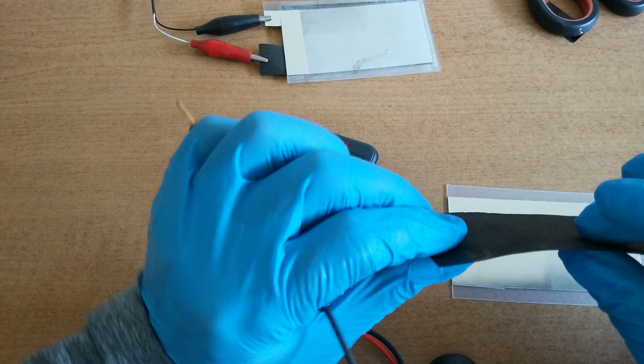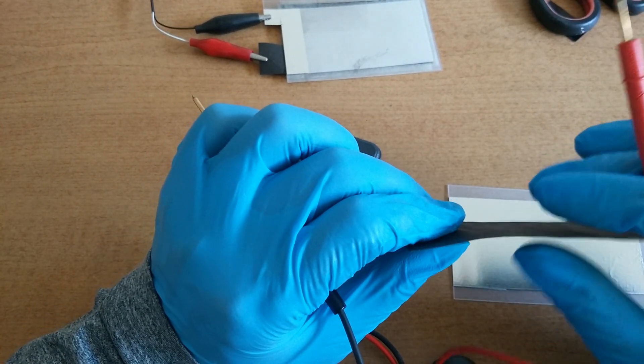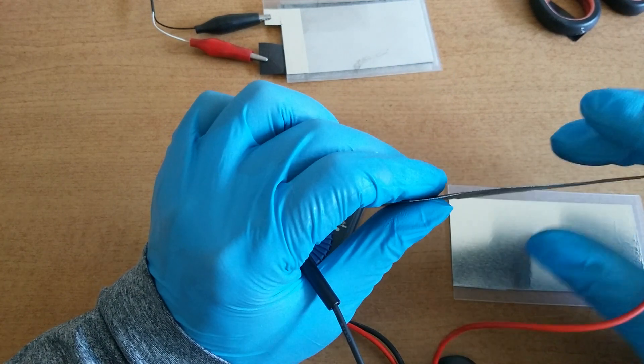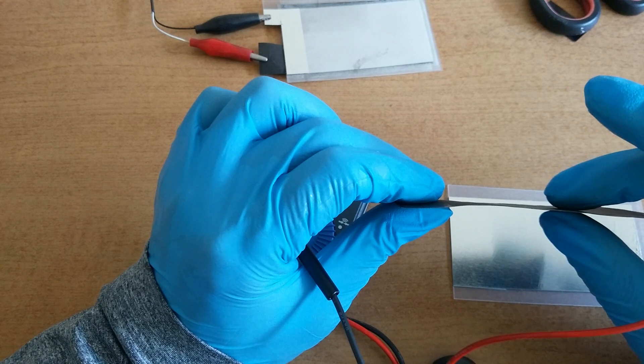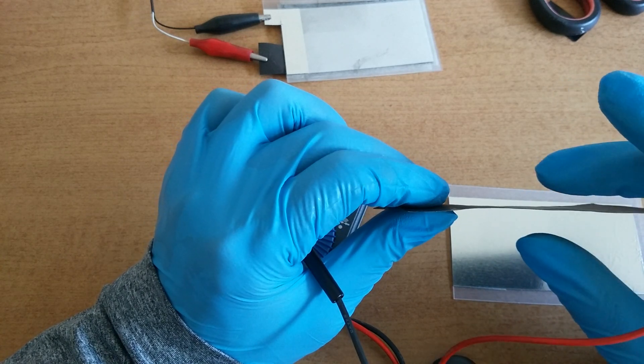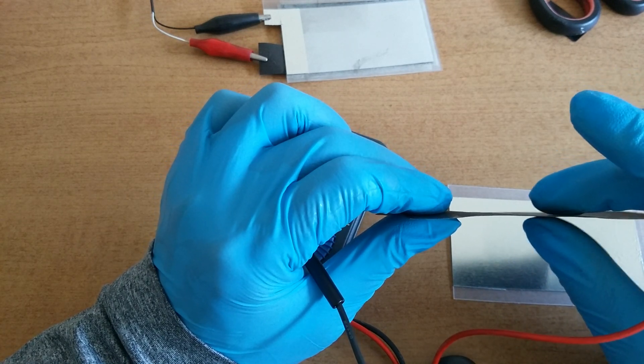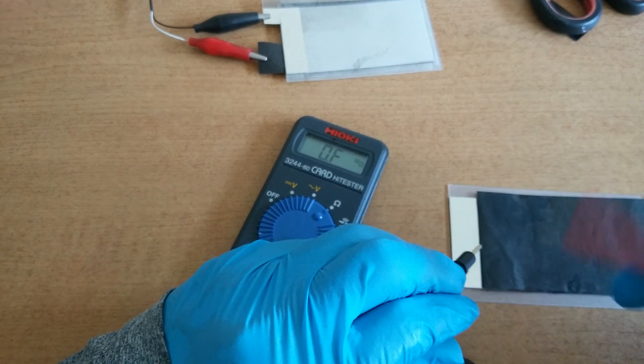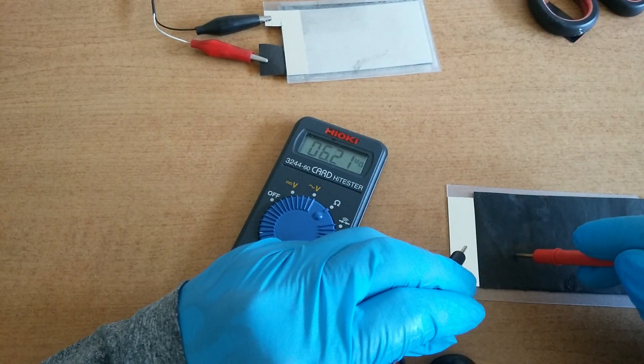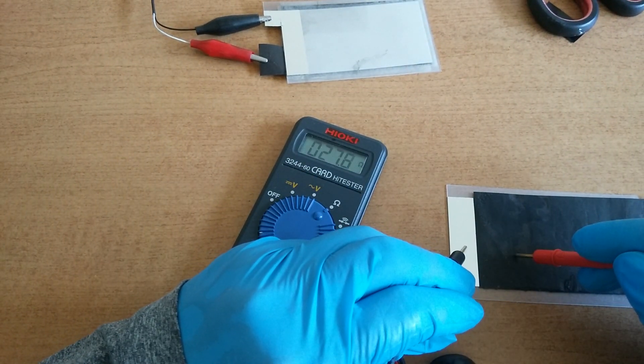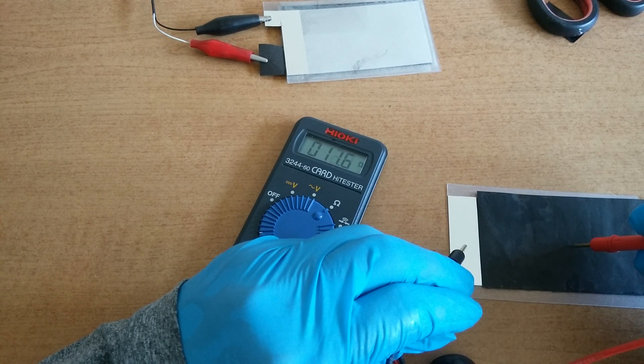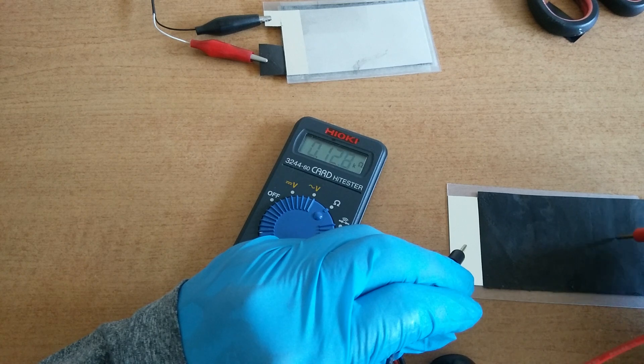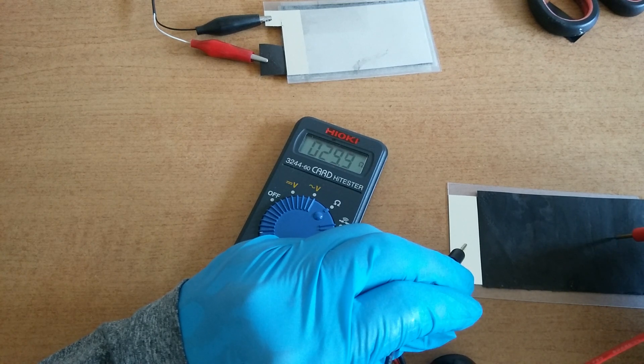I wonder why the ohm increases. Maybe between aluminum and graphene paper there is a space. I understand now. This is paper, so between graphene coating there is paper, and the paper plays a strong resistance. So I think this kind of method doesn't work, but I'll try that.